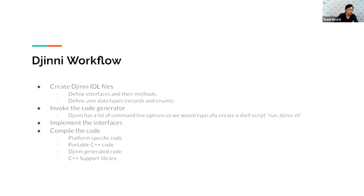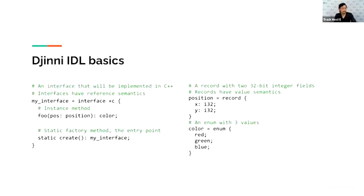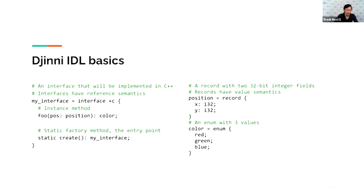Once the code generator is complete, it generates a bunch of interfaces in your preferred language, and you implement them. This is mostly C++. You then compile everything and link them together to create your final app. In this IDL example, we have an interface to be implemented in C++ — indicated by the '+c' after the interface keyword. The interface named 'my interface' has two methods: one instance method you call on the object, and one static factory method. On the right, we have a record and an enum. Records have named fields with specified types, and enums are very close to what C++ enums look like.